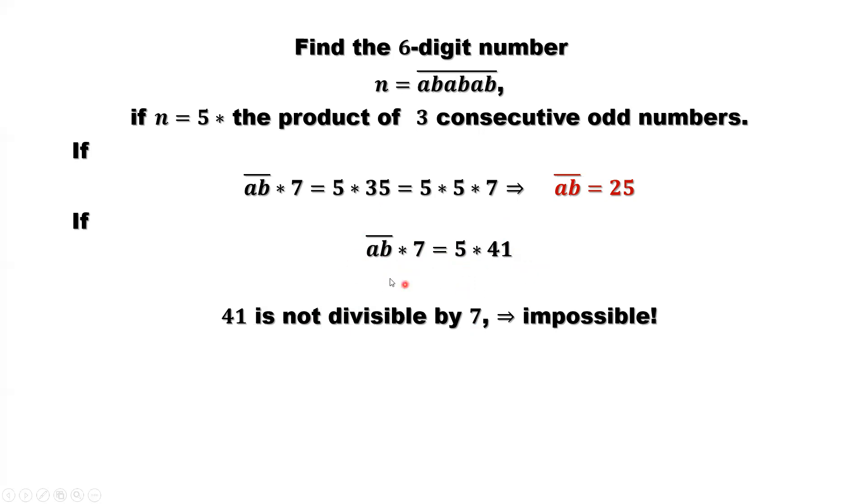Impossible. That means we don't have a solution from this information to find AB. So the only answer we find so far is AB equals 25. So this is the answer. N equals 252525.